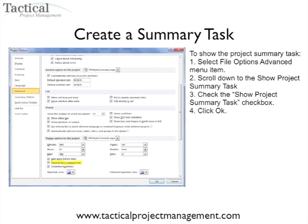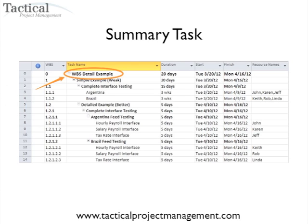The second lesson learned is learning to create a summary task. A summary task will take the name of your project schedule and create a high-level summary that rolls up all the project data into one. In this example, at task zero in the work breakdown structure, we've created a summary task called the WBS Detail example. It goes through all your subtasks and automatically calculates the roll-up — in this case 20 days in duration — and if you look at cost, it'll summarize that for you as well.